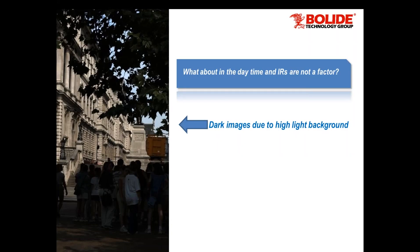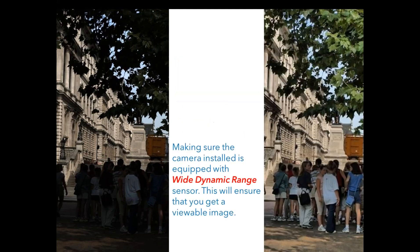Dark images during the day can be corrected with Wide Dynamic Range. For those not familiar, WDR is a sensor that allows background light to not affect foreground light. There are two kinds: digital wide dynamic and mechanical wide dynamic. Mechanical is better — it's a true wide dynamic and you'll get the best picture with it. When you go to install a camera, you want to make sure you have the right camera for the job.